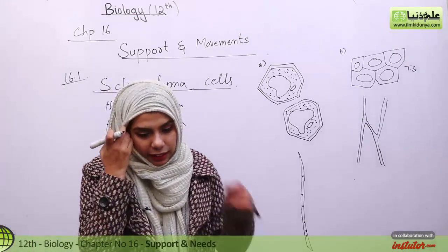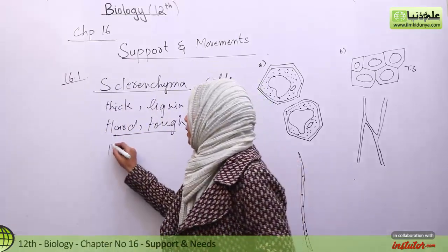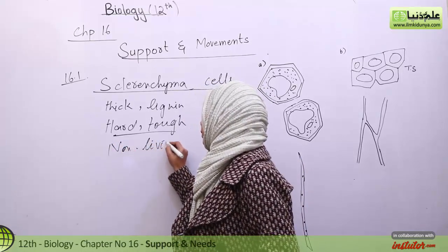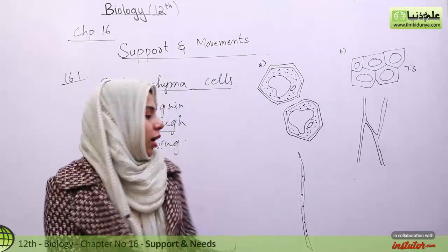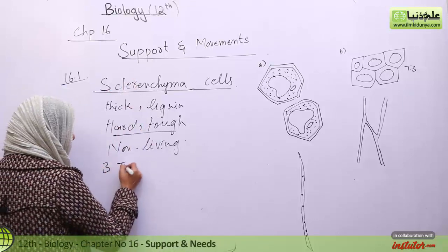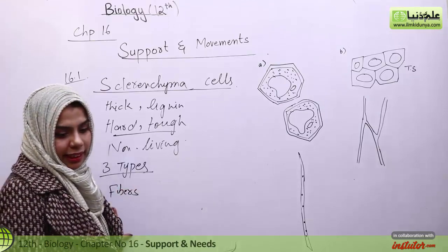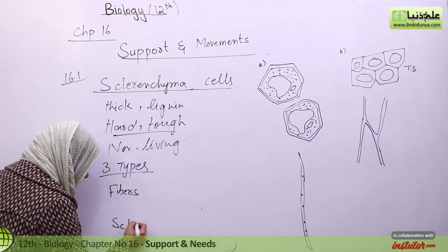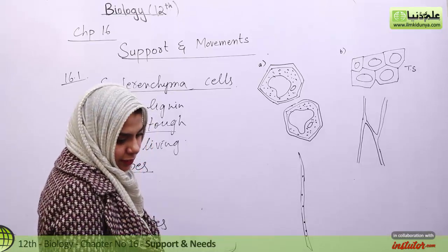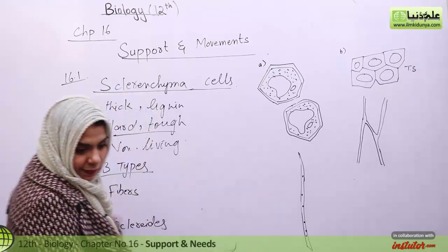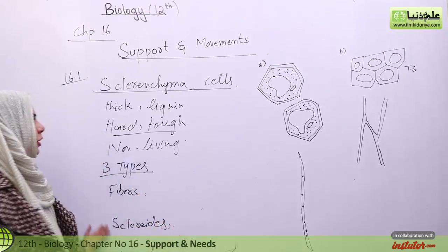Most sclerenchyma cells are non-living — they cannot reproduce further, they do not divide. Sclerenchyma has three types: one is known as fibers, the second one is known as sclereids, and the third one is known as vessels, which we also call tracheids.